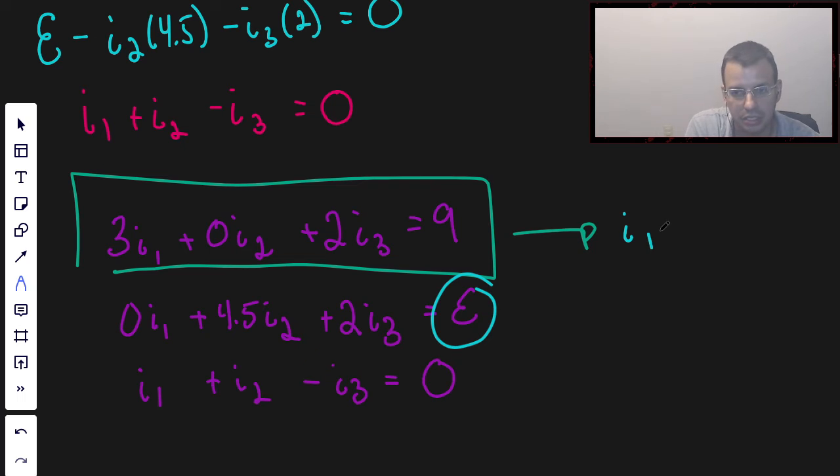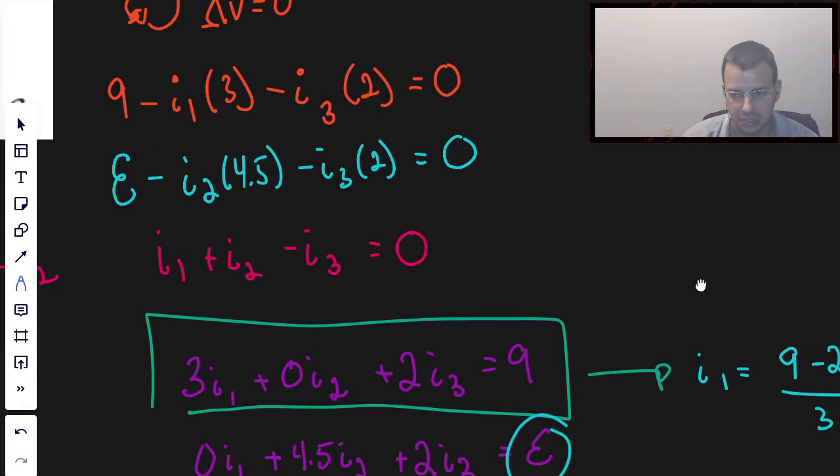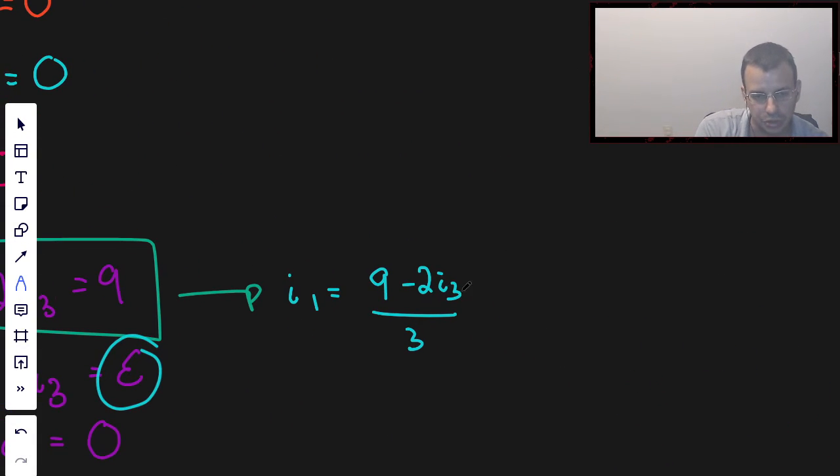I1 equals 9 minus 2I3 over 3. We know that I3 is 3A, so it's going to be equal to 9 minus 6, 2 times 3 is 6, over 3. 9 minus 6 is 3, 3 divided by 3 is 1. So I1 is 1.